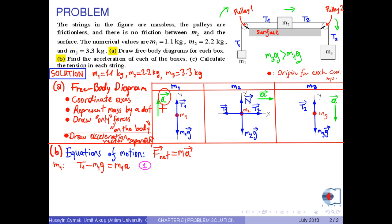Next, for mass M2, to write the equation of motion along the x-axis, we take the direction of the acceleration vector as positive. Therefore, the net force along the x-axis becomes T2 minus T1, and it is equal to M2 times A by the Newton's second law.